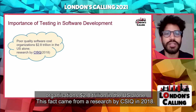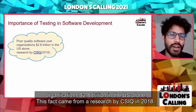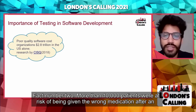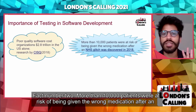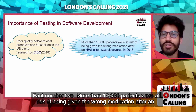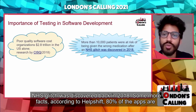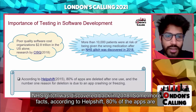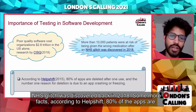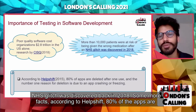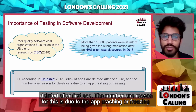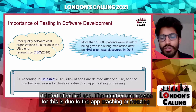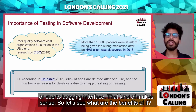Fact one: poor quality software cost organizations $2.8 trillion in the U.S. alone — this came from a research by CISQ in 2018. Fact two: more than 10,000 patients were at risk of being given the wrong medication after an NHS glitch was discovered back in 2018. And for some more facts, according to HelpShift, 80 percent of apps are deleted or uninstalled after first use, and the number one reason is due to apps crashing, freezing, or having a buggy interface.